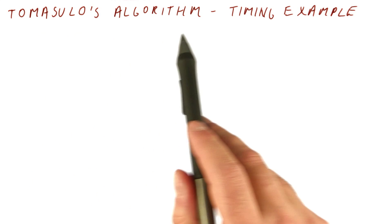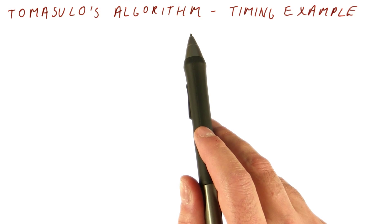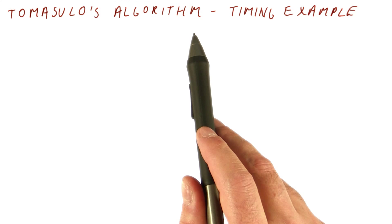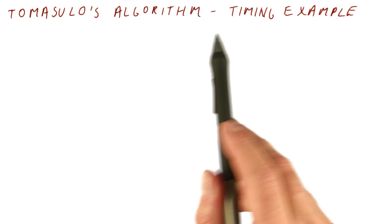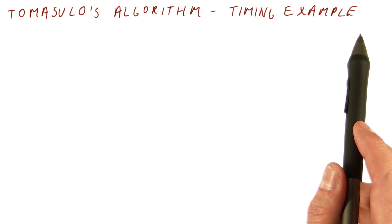Now, it often happens that when doing something like an exam on Tomasulo's algorithm, we just care, for example, in what cycle something issues or in what cycle something finishes, or how many cycles it took overall. So let's go through an example that is just trying to track the timing and not trying to keep track of everything in every structure and so on.